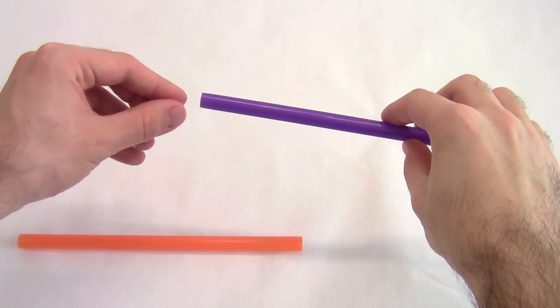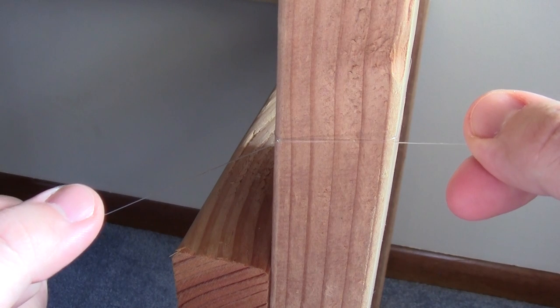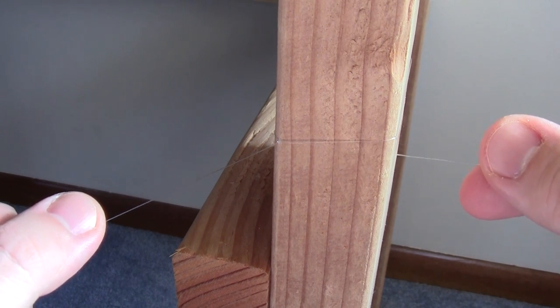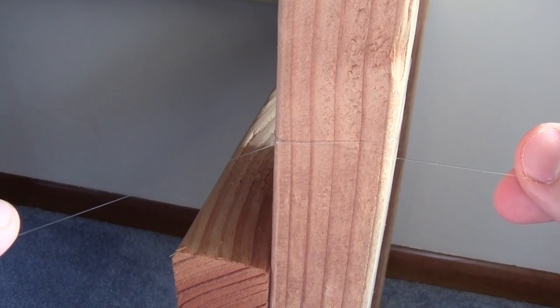Start out by threading the fishing line through both of the straws. Pull the fishing line tightly across the room and tie it to something sturdy on both ends like a heavy piece of furniture. Make sure the line is pulled tight and there is no slack.